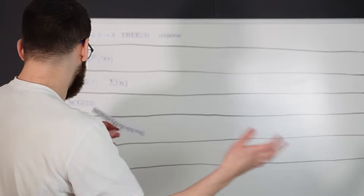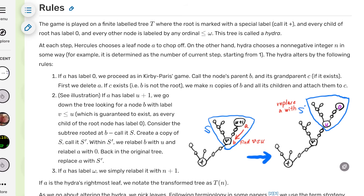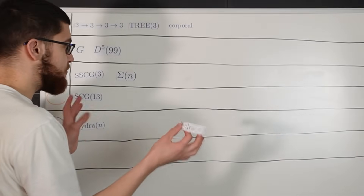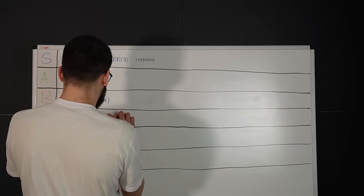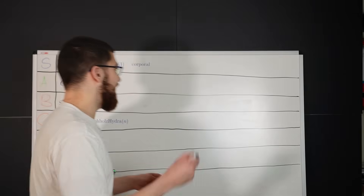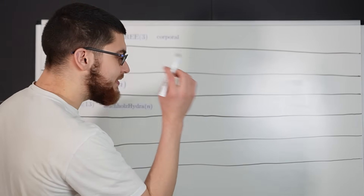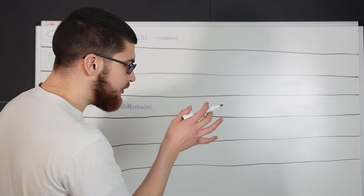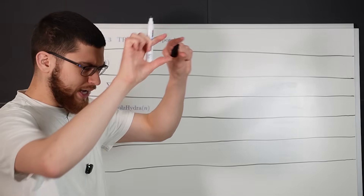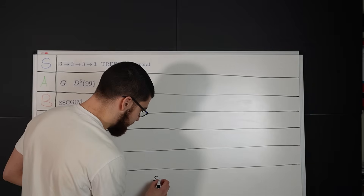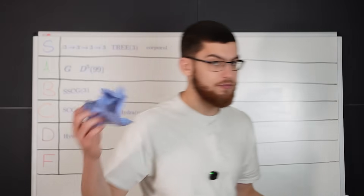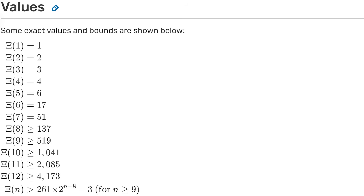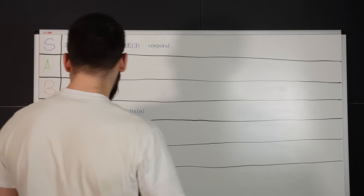Next is the Busy Beaver Hydra number of N, which is basically a modification of the Hydra function with a specific rule change. It's much bigger than Hydra and probably faster-growing than TREE and everything. I'll put it one higher, but I still don't really like how it's a game. Also, we're missing one here — I forgot to print it off. I'll just write it down: it's the KSI function. The KSI function uses SKI calculus, which is almost like a code that does operations — for example, S of X and Y does something. It's basically a set of functions. I actually prefer this because it's not a game; you can mathematically define it very easily. I'm going to put KSI of N a bit higher than Busy Beaver.